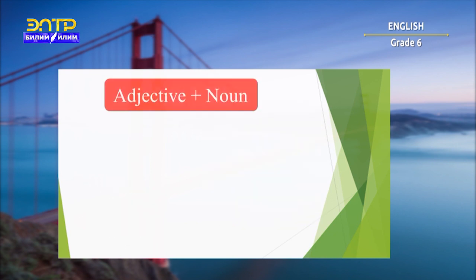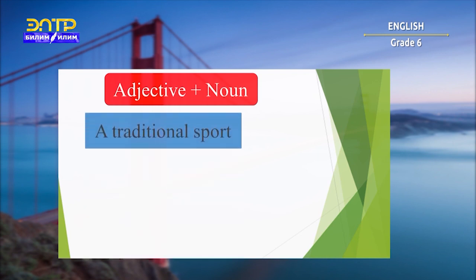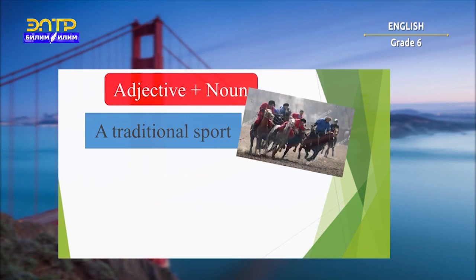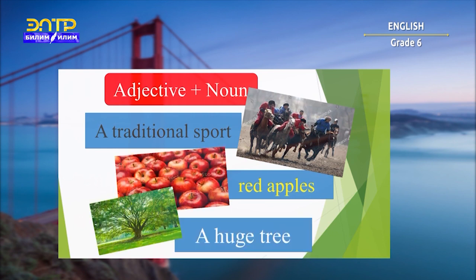Do you remember the structure of using adjectives with nouns? Yes — adjective plus noun. Remember, please: the adjective is before the noun. For example: a traditional sport, red apples, a huge tree.